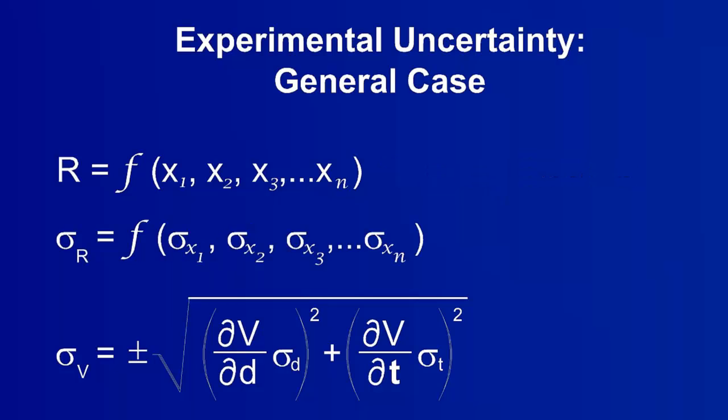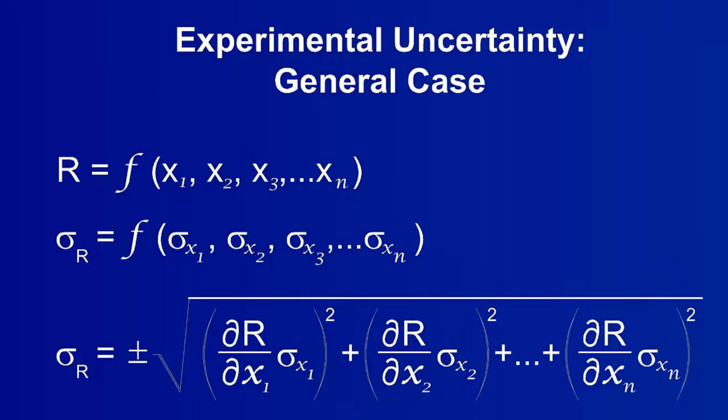The uncertainty of r is a function of the uncertainties of all of those variables. This function is always the uncertainty of r is equal to the root sum of the squares of the partial derivative of each variable multiplied by the variable's uncertainty.